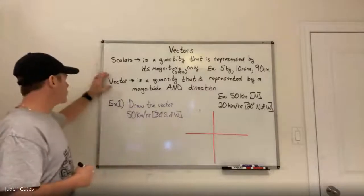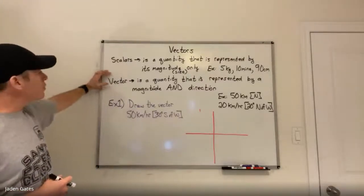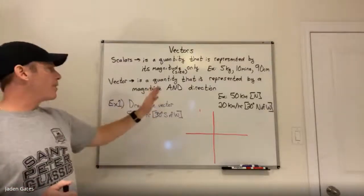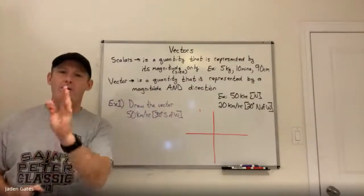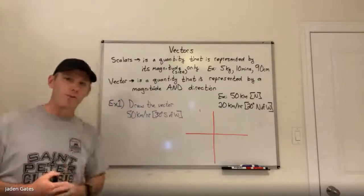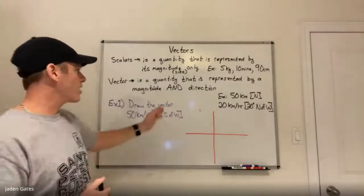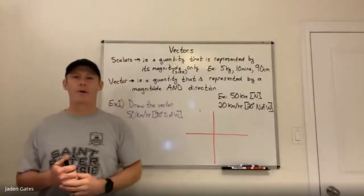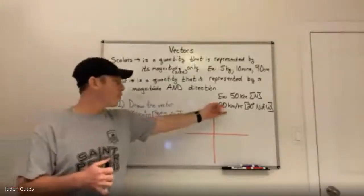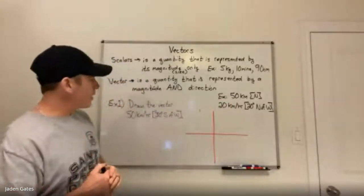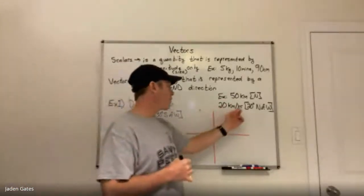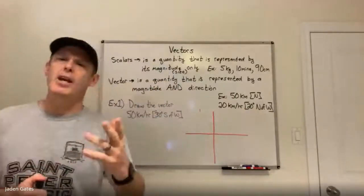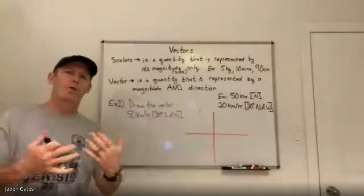What we're interested in today is something called a vector. A vector is a quantity — something you can count — that is represented by magnitude and direction. Two things, two parts to it: size and direction. So for example, if you're traveling, you could say that I went 50 kilometers north, or you could have something where you have 20 kilometers an hour, 20 degrees north of west. I'm going to explain what that means.